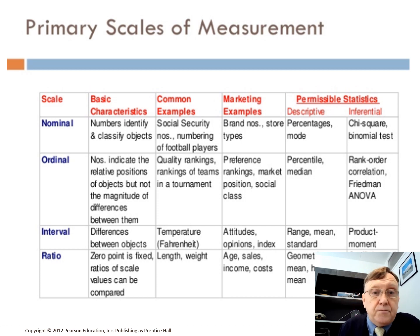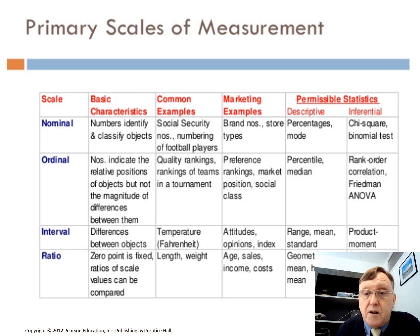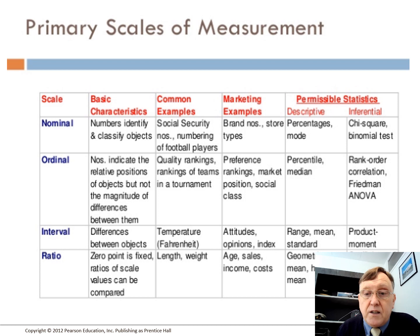For the interval scale, the difference between objects can be measured — for example, like temperature. Marketing examples include attitudes, opinions, and indices. Permissible descriptive statistics include range, mean, standard deviation, etc.